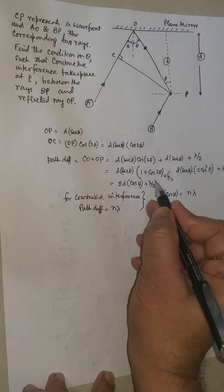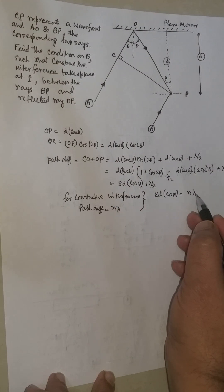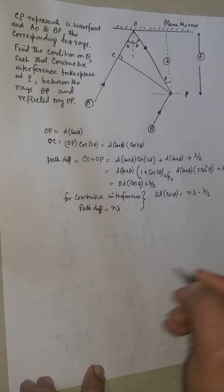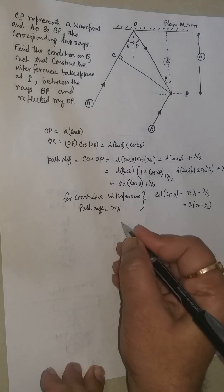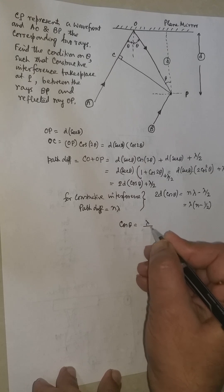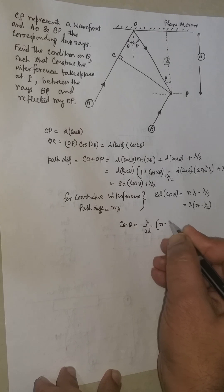So 2D cos theta plus lambda by 2 is N lambda. So 2D cos theta is N lambda minus lambda by 2. So this will be lambda times (N minus half). From there, cos theta is equal to lambda divided by 2D times (N minus half).